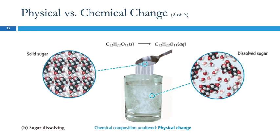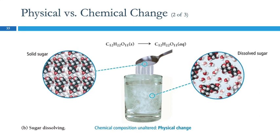When we stir sugar into water, it seems to disappear — we can't see it anymore. Did it disappear? No, it's still there. If you taste it, it's going to be sweet now when the water wasn't sweet before. What's happening is the solid sugar is dissolving — those particles are separating and mixing with the water, but the particles themselves, the sugar molecules, are the same. So that's a physical change, because we had sugar molecules before and we still have sugar molecules.